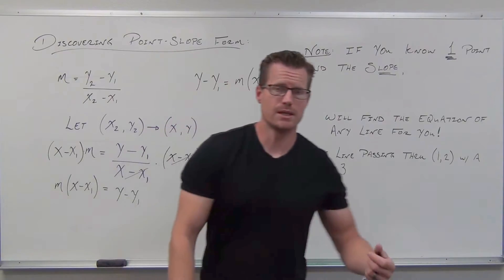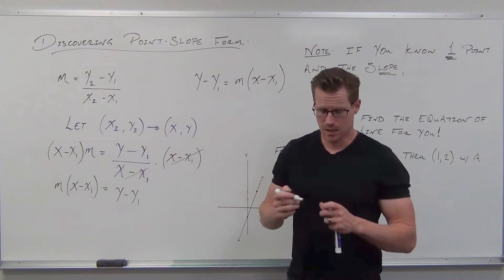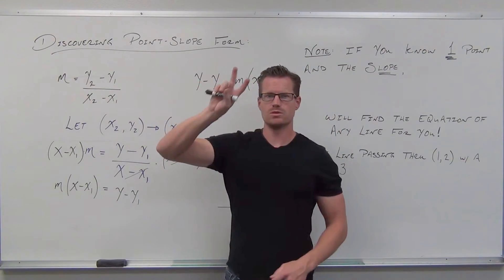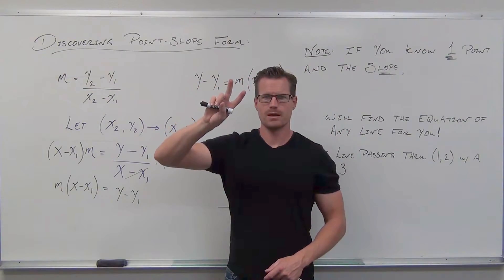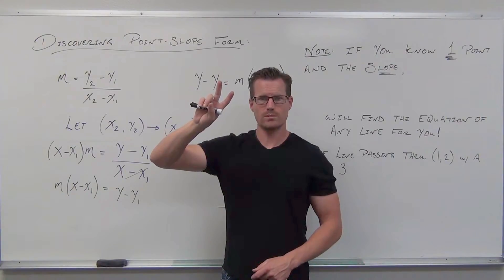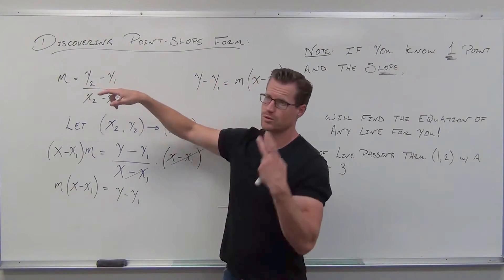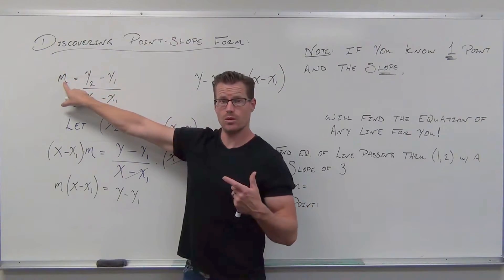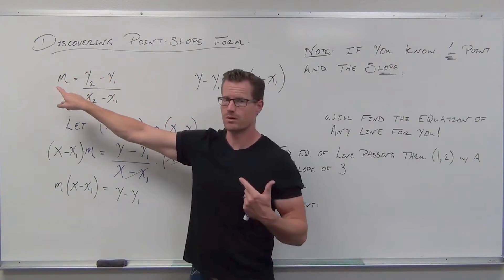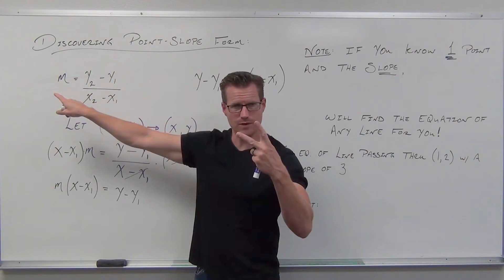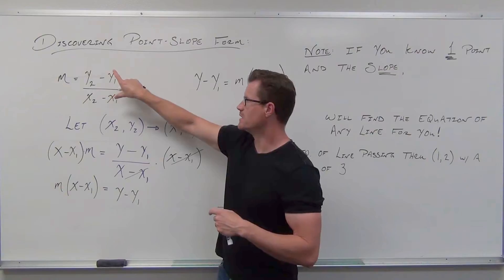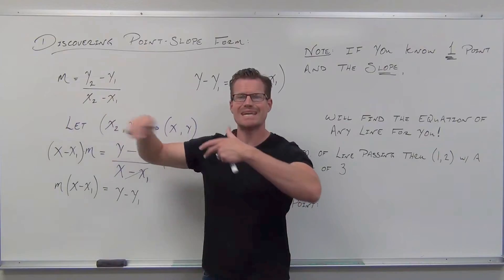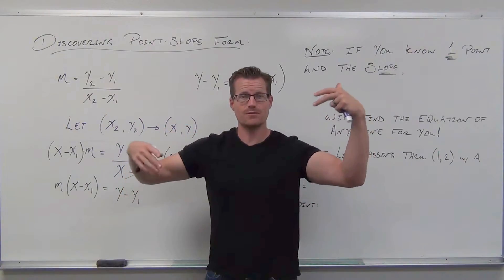Before we go any further, I really need you to get where this comes from. The whole idea in a short recap is, the slope formula is created by knowing two solid fixed points. If you don't know two points, you need to know one point and a way to get the other one. Provided we know one point and a slope, we don't need to know the second one. Let's let that represent any other point of the line.